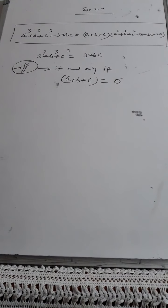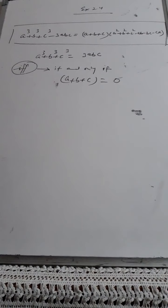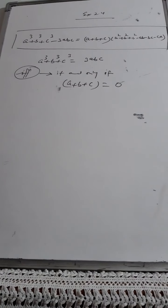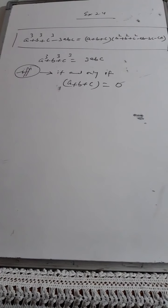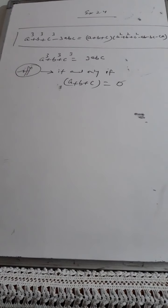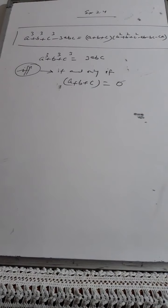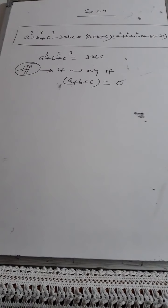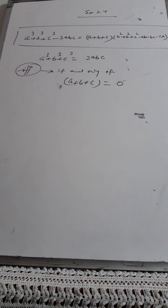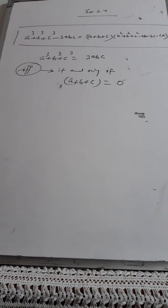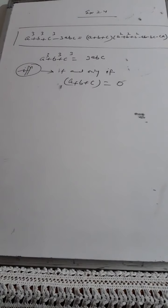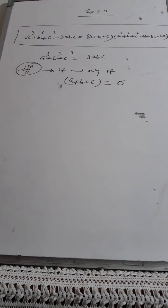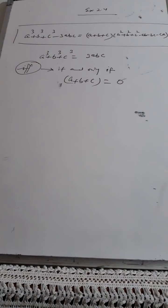We previously worked on (a+b)³, (a-b)³, a³ - b³, and a³ + b³, especially in factorization. We focused on identifying what a and b are — that helped a lot to factorize expressions. Similarly, if a question is a perfect cube like (a+b)³, I can expand it as (a+b)(a+b)(a+b).